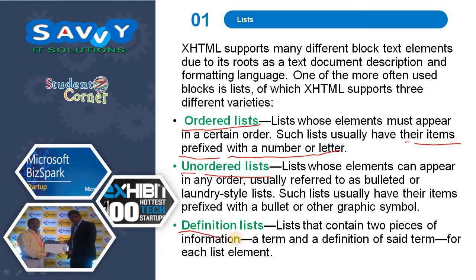The third one is definition lists — lists that contain two pieces of information: a term and a definition of said term for each list element.